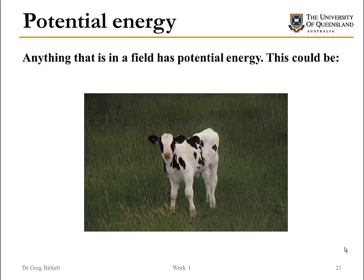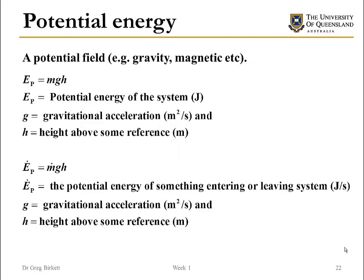Potential energy - anything that is in a field has potential energy. This could be a potential field, something like gravity or a magnetic field. Gravity is the most common field for engineers to deal with, and a common expression might be mgh - the mass times by the height times by the gravitational acceleration.